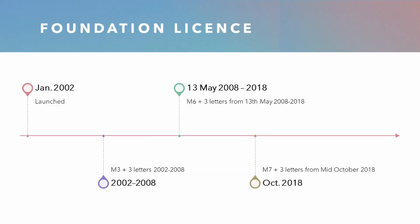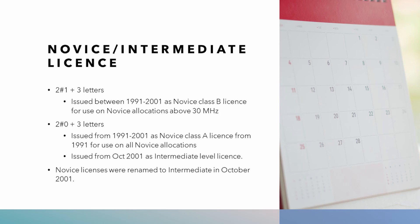In January 2002, the Foundation licence was launched. From 2002 to 2008, the licence granted would be an M3 licence followed by three letters. From 2008 to 2018, the licence became an M6 licence with three letters. And then in October 2018, that was superseded by the M7 call sign with three letters.